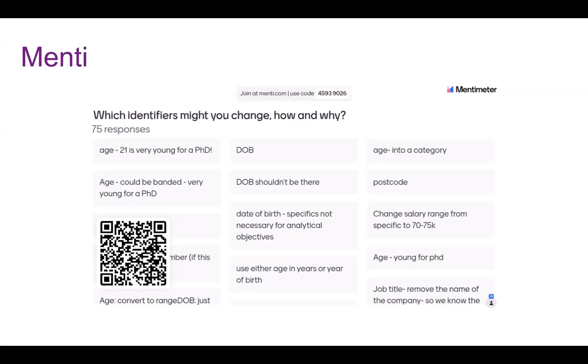Using an age band will help protect identity while still allowing for research into unique career paths for young PhD holders. For the ethnic group, further editing the detailed ethnic group to a broader category will help maintain some privacy while still enabling research into ethnic diversity — finding a balance for a range of different analyses.